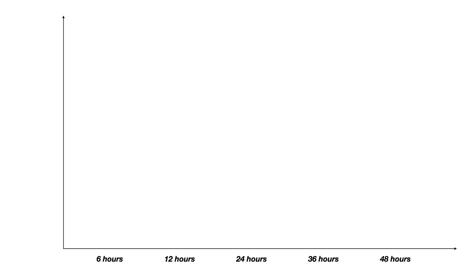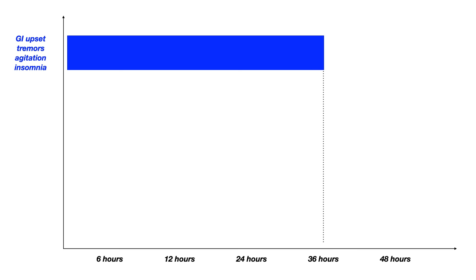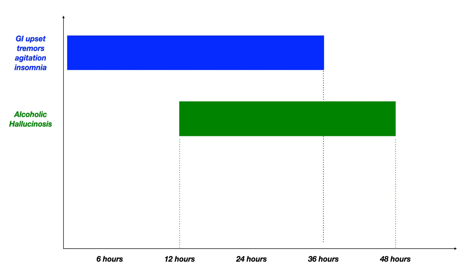The first symptoms between zero and 36 hours of alcohol withdrawal are the mildest: GI upset, tremors, agitation, and insomnia. Then between 12 and 48 hours is what's known as alcoholic hallucinosis — a distinct syndrome of visual hallucinations occurring in the setting of intact orientation. So even though the person is withdrawing and having visual hallucinations, they still know their name, know the year, know where they are. Alcoholic hallucinosis is distinct from delirium tremens because orientation is intact.